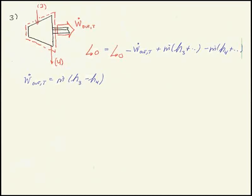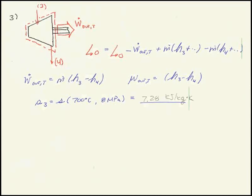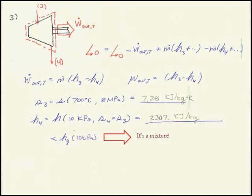And as before, I need two properties to find all the other properties. H3 is already known. H4 I find because I know the pressure at 4, and like with the pump, the entropy at state point 4 is the same as the entropy coming into the device. So as a pit stop on the way to finding H4, I find S3 first. The entropy at 700 Celsius at 8 megapascals is 7.28. And finally, the enthalpy at state point 4 is the enthalpy at 10 kilopascals, and S4 is equal to S3 equal to 7.28 kilojoules per kilogram Kelvin. So I find the number for that, about 2,300 kilojoules per kilogram. Plug those into my w equation, and I find my power out of the turbine per unit mass flow rate.